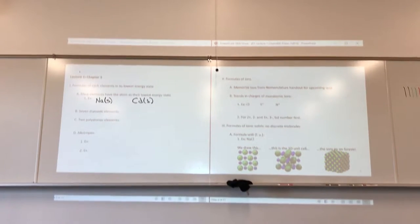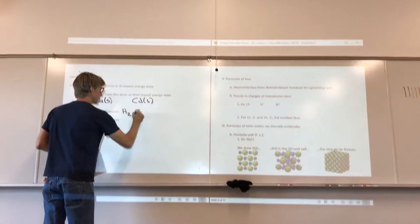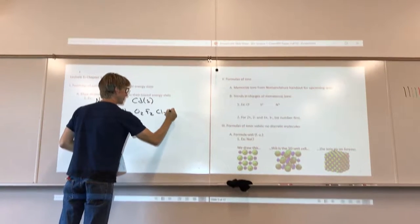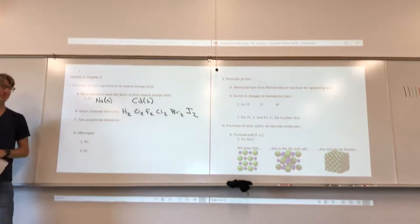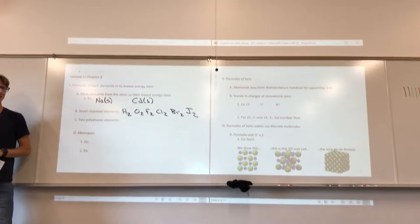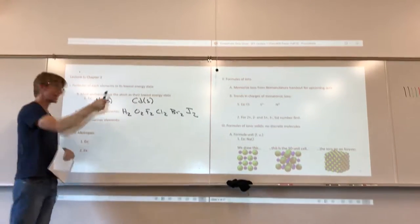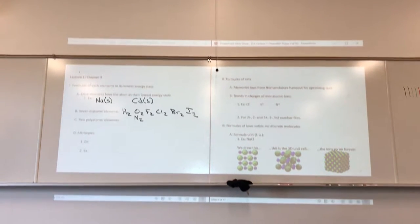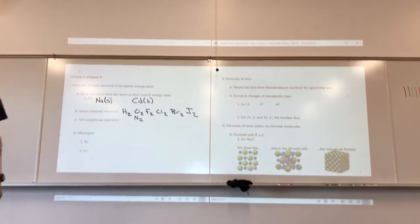The seven diatomic elements include hydrogen, oxygen, chlorine, fluorine, bromine, iodine, and nitrogen. Except for hydrogen, they form a seven shape on the periodic table: N-O-F-Cl-Br-I. However you remember it is fine.